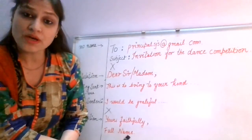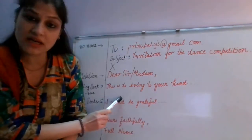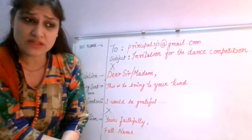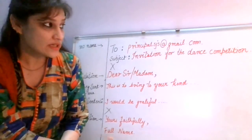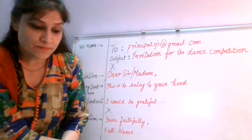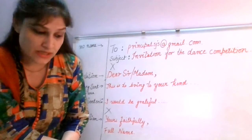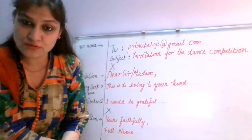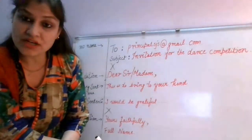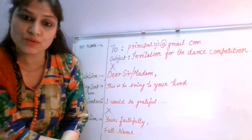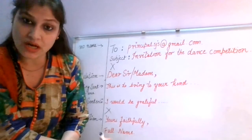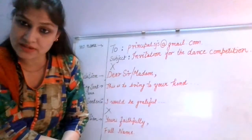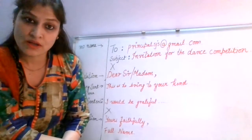If you have a question about where to write the date, it has to be in the content — in the body of your email. For example: 'I am writing this email to invite you on behalf of my school for the dance competition that will be held in the activity centre of Saint Jules School.' The date should be within 15 days in the future, and you'll also mention the timings. All the details you've written in the notice should be copied here without any mistake.